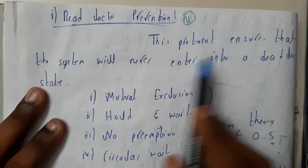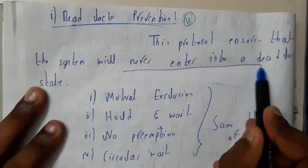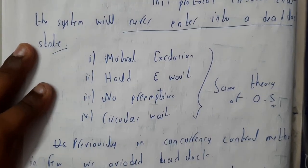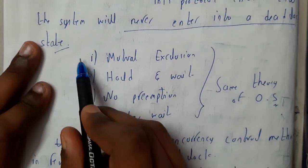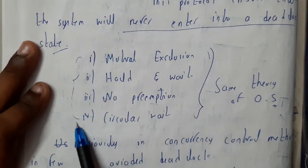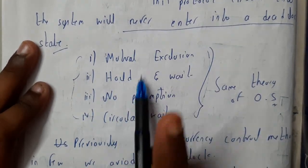The protocol assures that the system will never enter the deadlock state. In operating system, we have discussed deadlock prevention in which we explained four concepts of deadlock. We need to avoid any one or all of these to prevent deadlock.